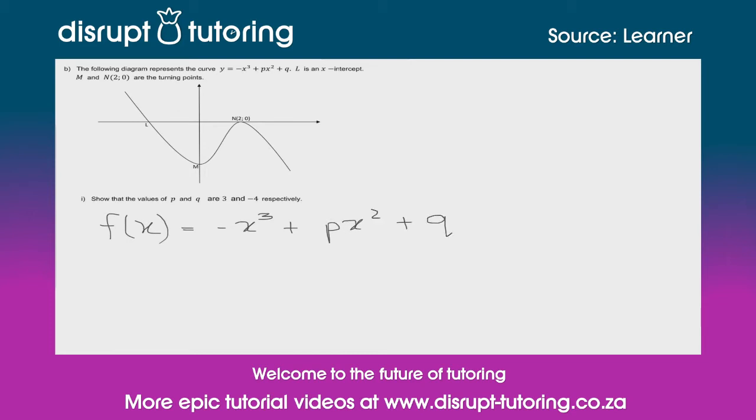Now in order to find turning points, we need to let the derivative equal zero. The reason for that is the derivative is the gradient. And we can see at both of these turning points, the gradient of the tangent at that point is zero. So let's find the derivative first. So we're going to say f dash of x is equal to minus 3x squared, plus 2px, and the q falls away.